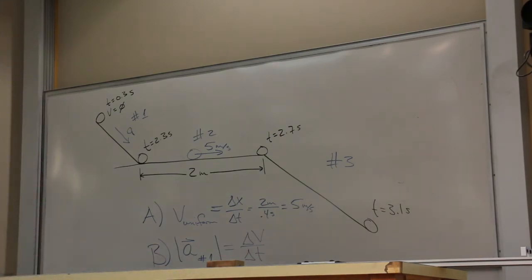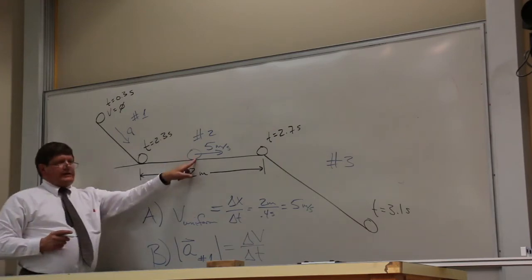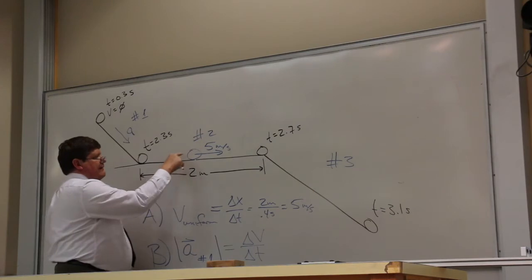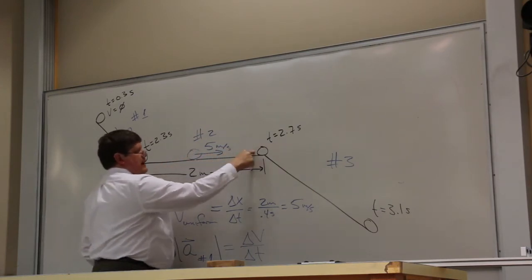And when they're going on a level surface, they go at constant speed. So, the fact that this is uniform means that if this ball had a speedometer, it would read 5 the whole way.